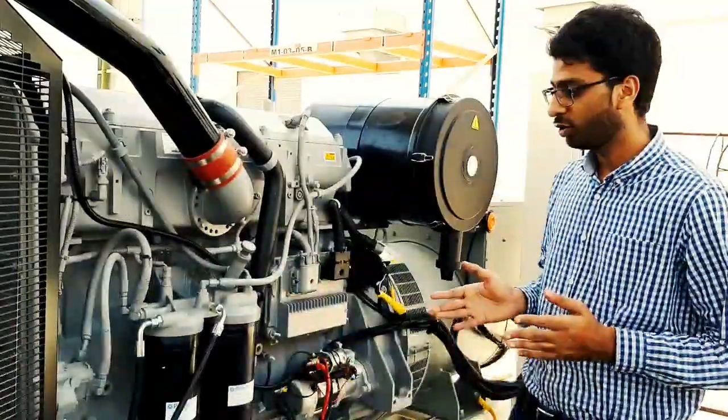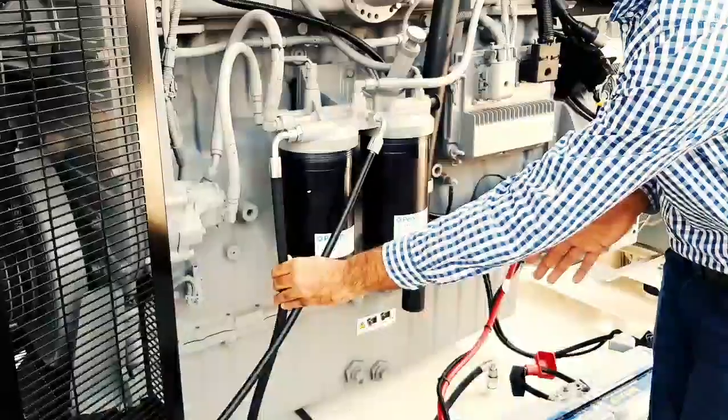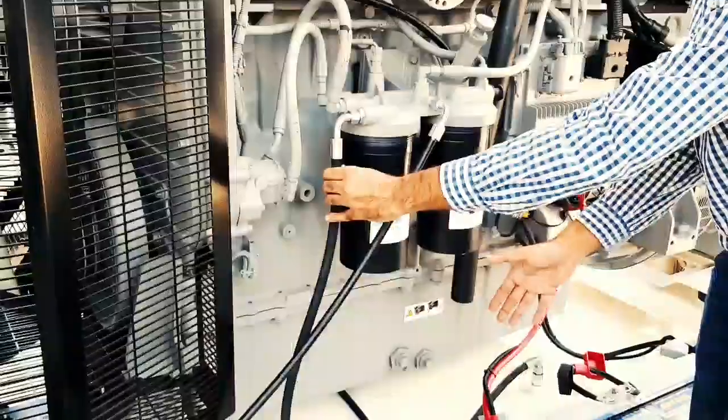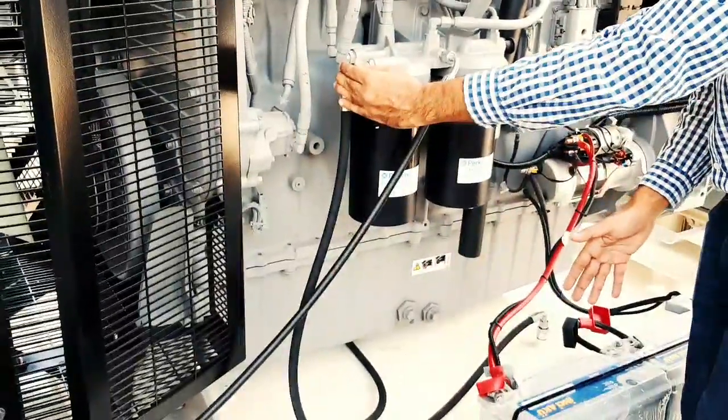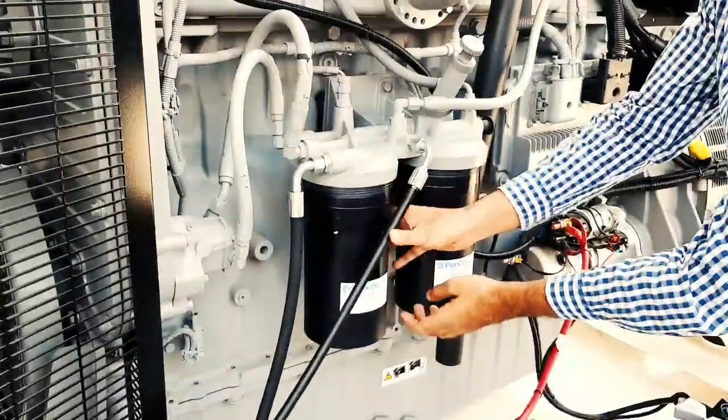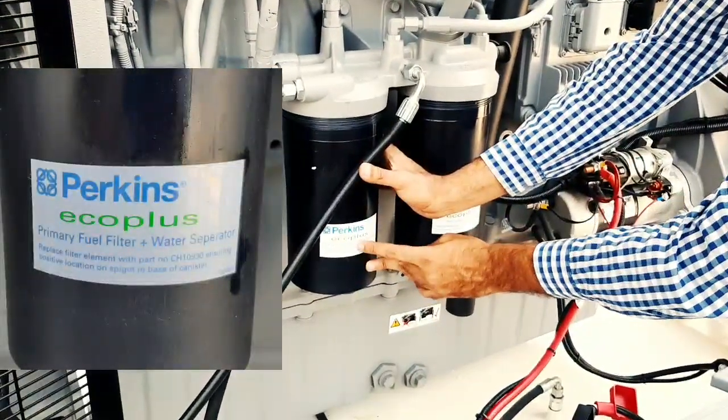So here as you see friends, this is the main line which is coming from our base diesel tank. This is the main incoming line. This line first enters the fuel in the primary filter. If you see here, this is the primary filter—the primary plus water separator. First the fuel will be entered in this filter and it will get filtered.